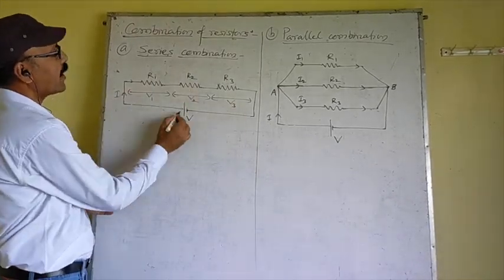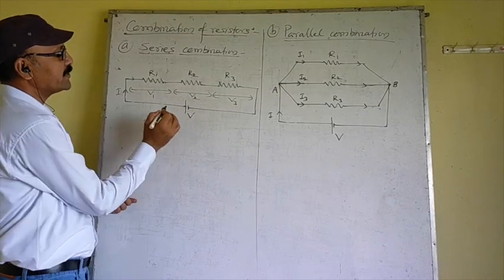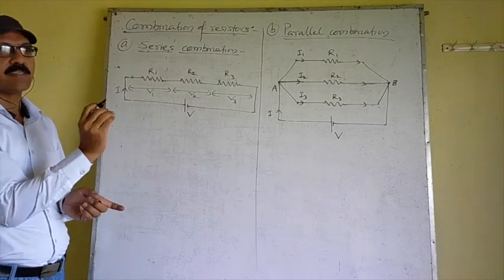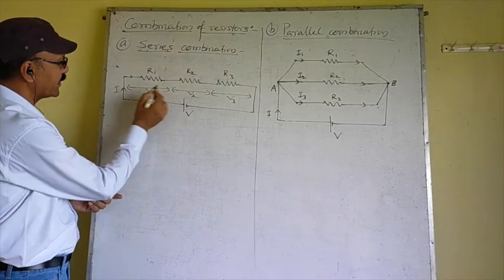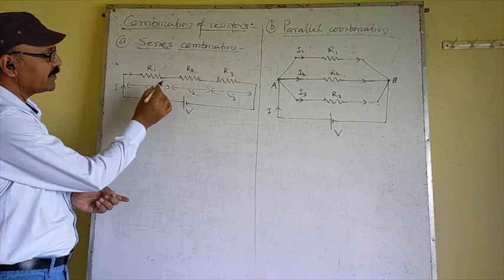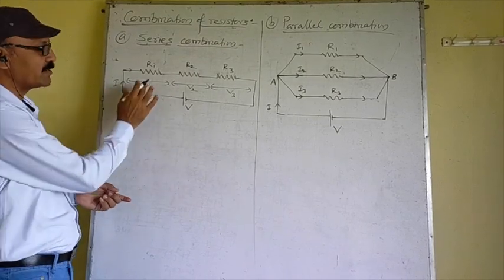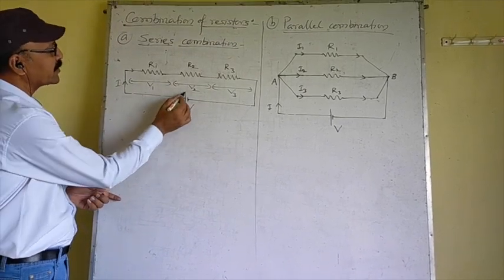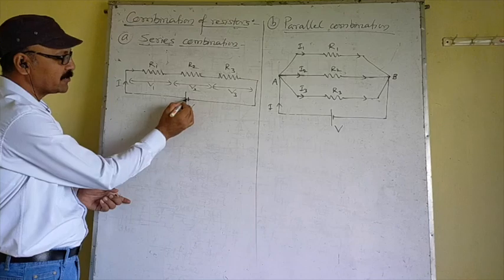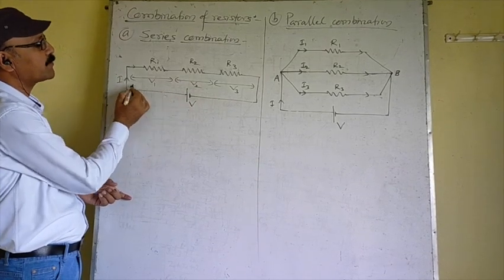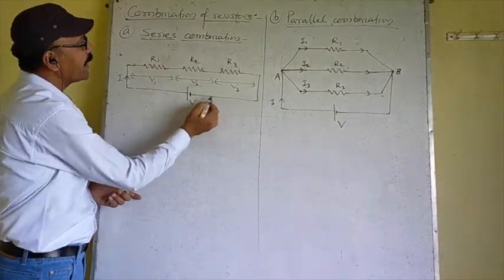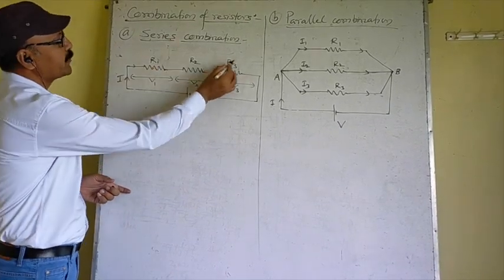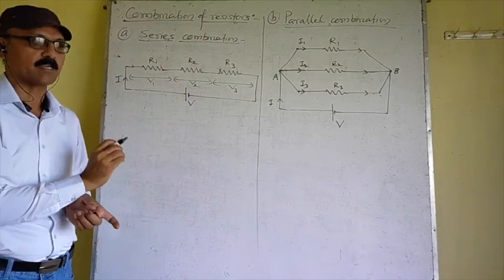These three resistances are connected with a potential difference. In the Series Combination, an important point is that the current is the same through all three resistances, but the potential is different. The positive terminal of the cell provides current that enters the negative terminal. So the same current I passes through all three resistances in the Series Combination.